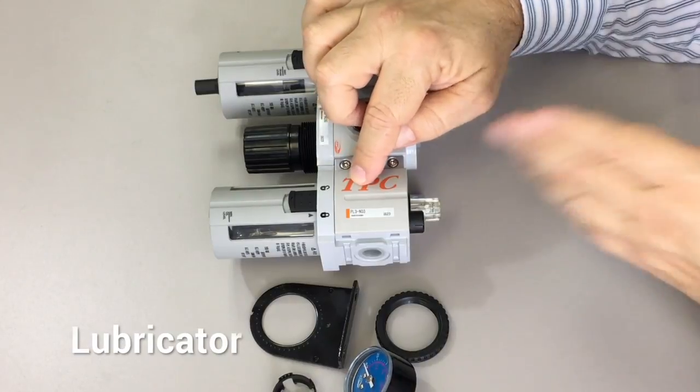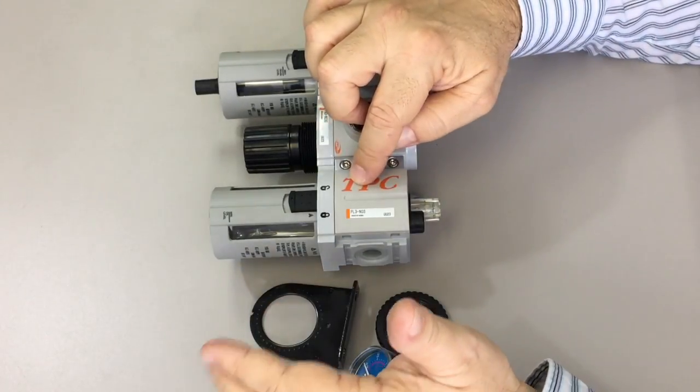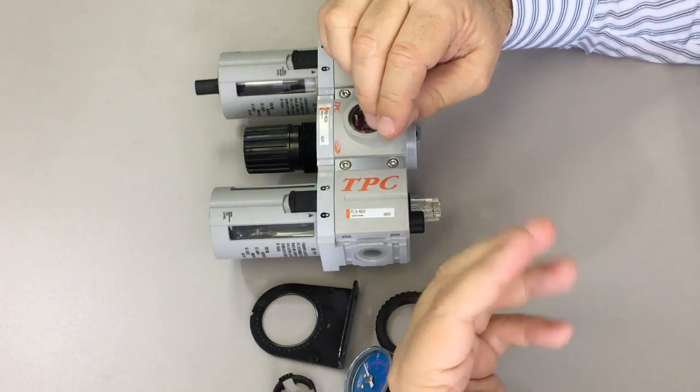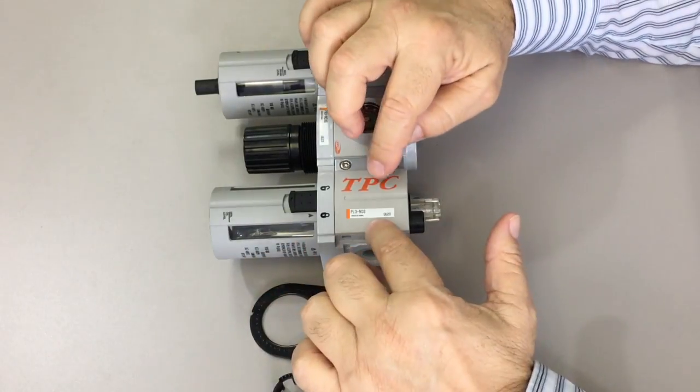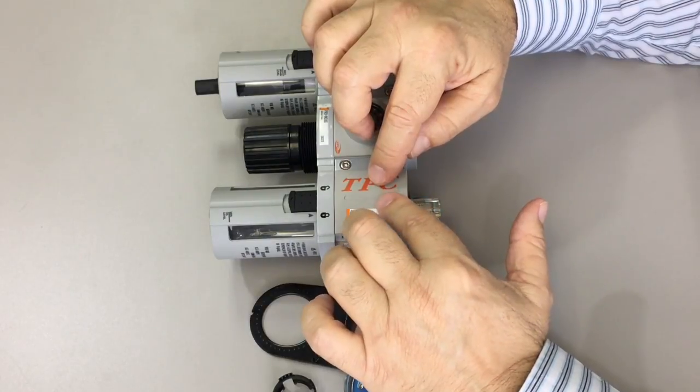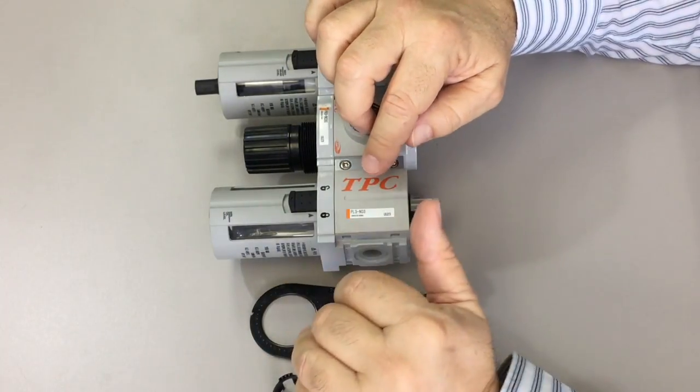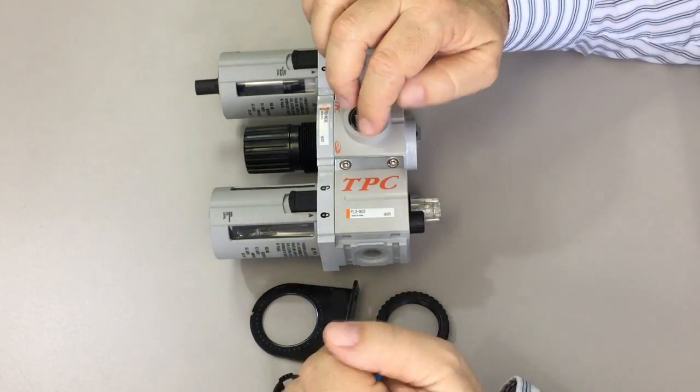The next item along is the lubricator, which, just like it sounds, is for adding a stream of aerosolized lubrication oil to the line. This, of course, is meant to protect moving parts in the components that are downline from the FRL, such as cylinders or valves.